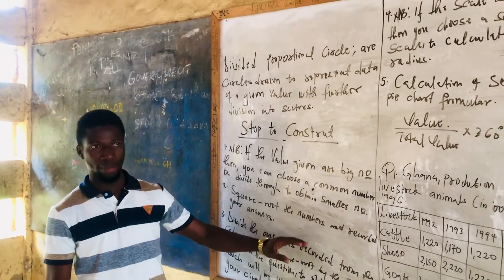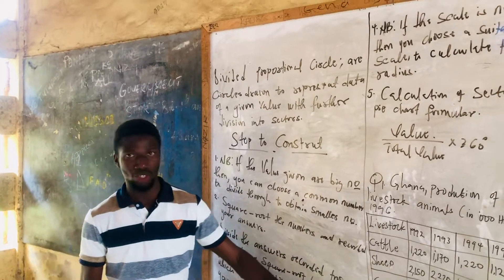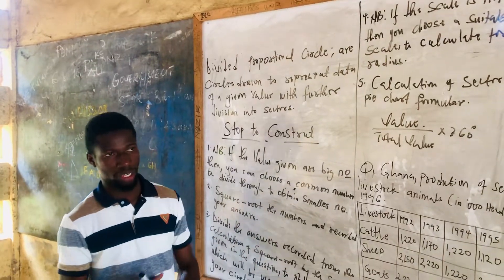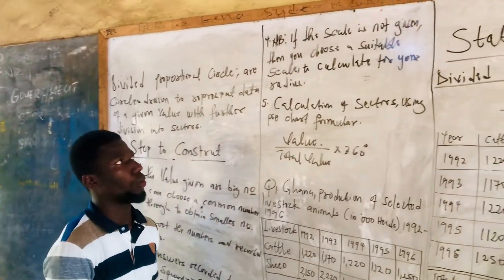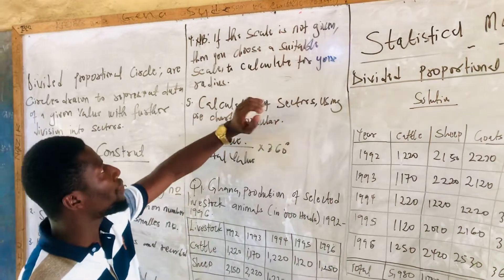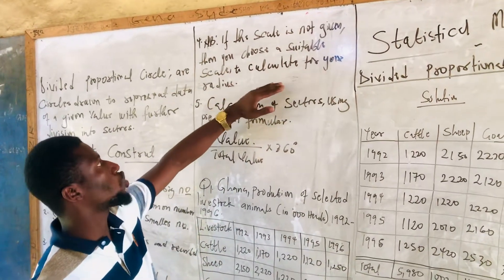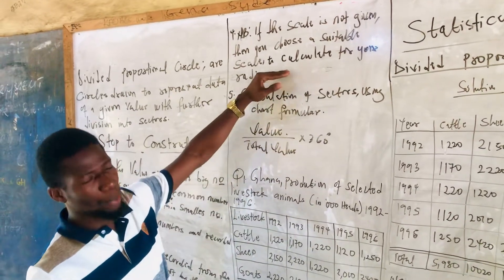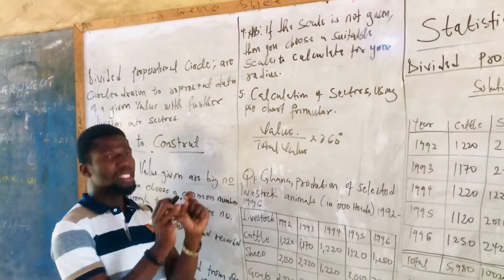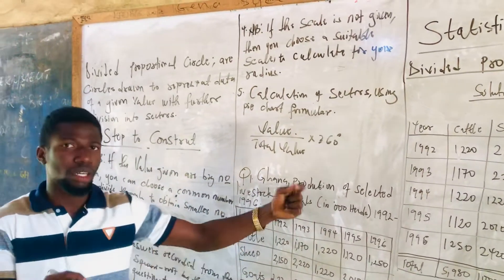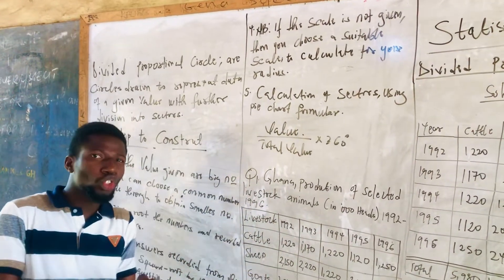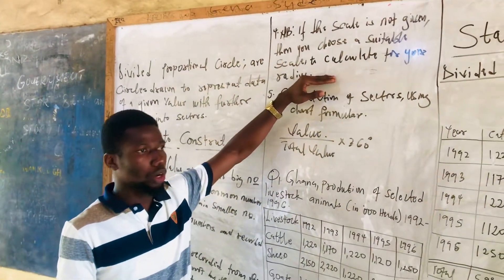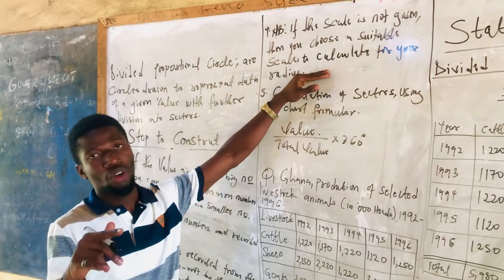After we square root the numbers, we divide by the scale previously given to us in the question to obtain our radius to draw the circle. Step 4: if the scale is not given, then you choose a suitable scale to calculate your radius. Sometimes the question will not give you the scale, so you need to choose a suitable scale which will enable you to generate a radius to draw a suitable circle.